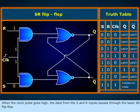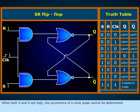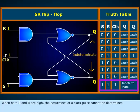When the clock pulse goes high, the data from the S and R inputs passes through the basic SR flip-flop. When both S and R are high, the occurrence of a clock pulse cannot be determined.